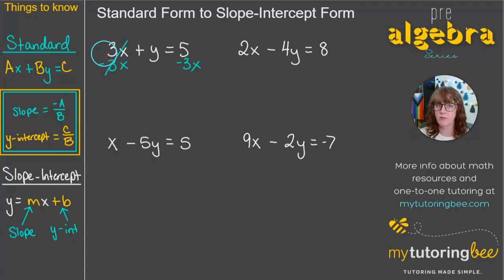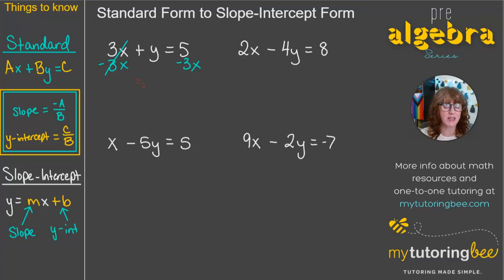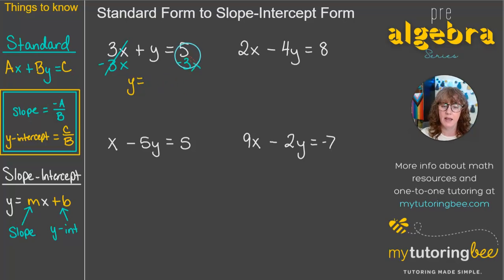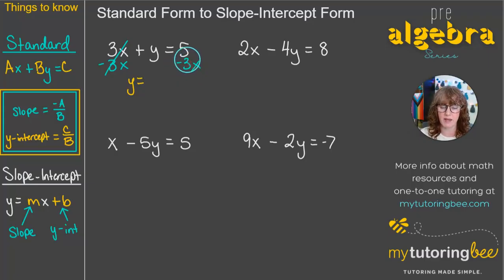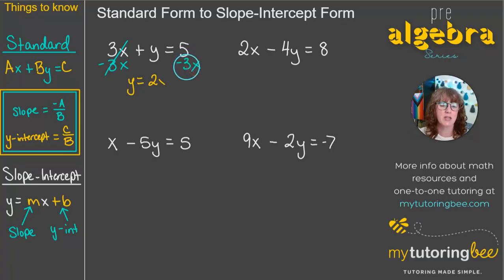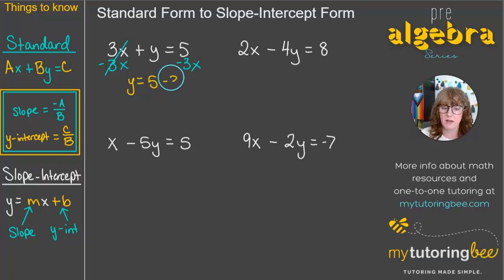Now if this 3X were negative, we would add 3X to both sides. However, that first leading term in standard form shouldn't be negative, so we're going to subtract 3X from both sides, leaving us with Y on the left-hand side. Over on the right we've got 5 minus 3X. Another common mistake is students will want to combine these and write 2X, but these are not like terms, so we're left with 5 minus 3X.